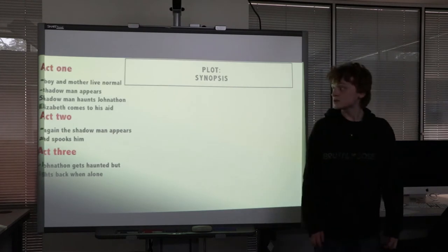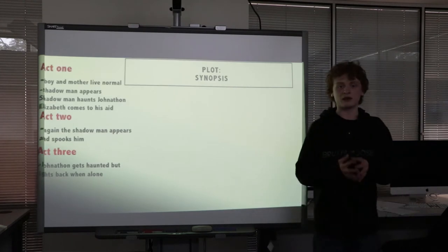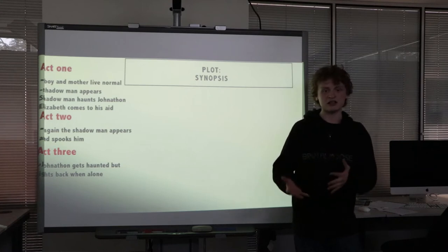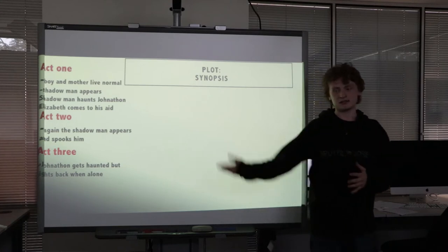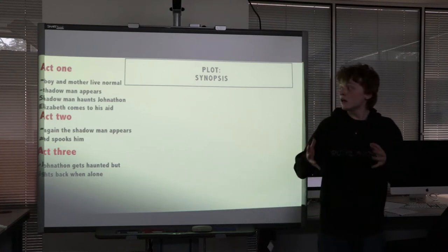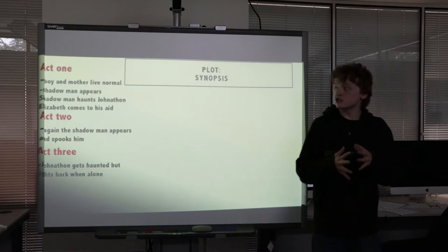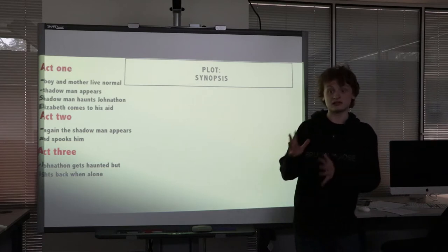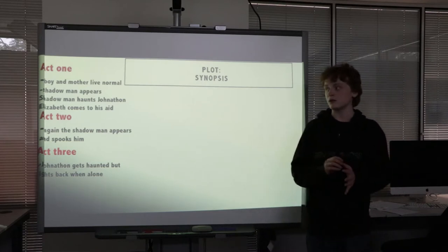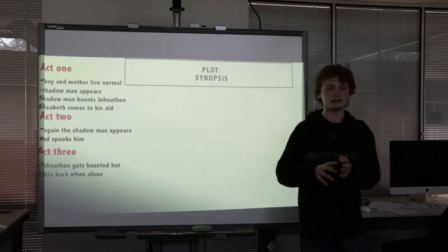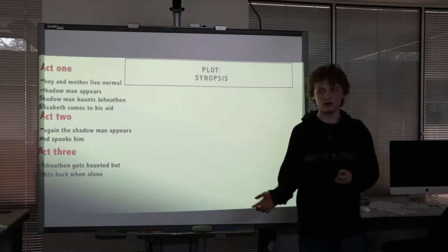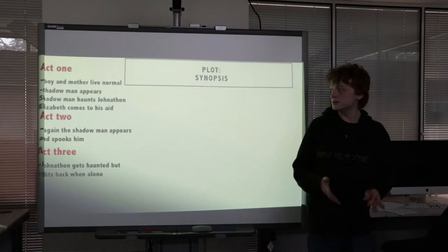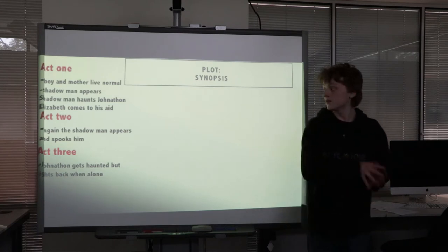This is the story. Act 1: the boy and the mother live a normal, everyday life. Single mother, father's nowhere to be seen. Then the shadow man appears — this creature. You won't fully see it until Act 3; it's only noises and sounds in Act 1. Jonathan calls for his mother, and Elizabeth comes to his aid trying to help him.